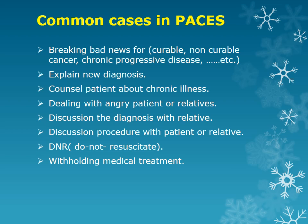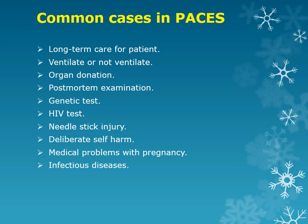Common cases include: breaking bad news — either curable or non-curable cancer, or chronic progressive disease; explaining a new diagnosis for the patient, whether chronic or acute illness; counseling a patient about chronic illness and the management plan; dealing with angry patients or relatives; discussing the diagnosis with relatives; discussing a procedure with the patient or relatives; DNR and withholding medical treatment; long-term care and candidacy for ventilation.